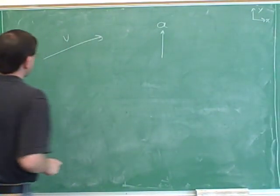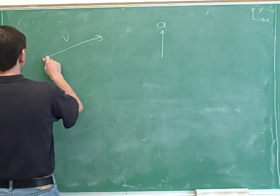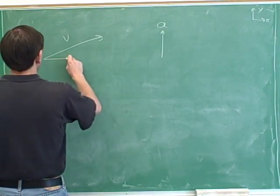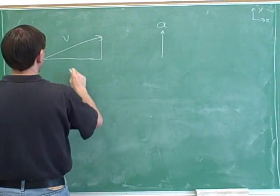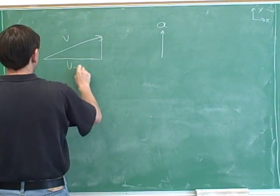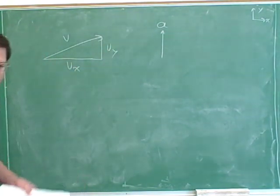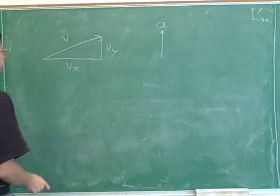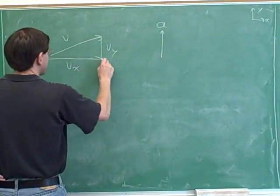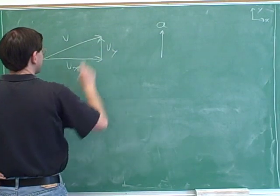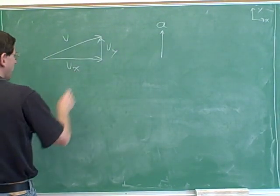The first thing we have to do with the velocity is break it into components. We draw a right triangle with the overall vector as the hypotenuse and we label the sides. Please remember to always label the sides and put arrows on them. The overall vector is pointing up and to the right, so our legs are pointing to the right and up. And now we can interpret that.